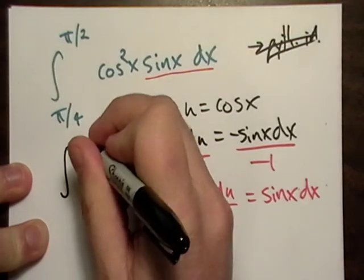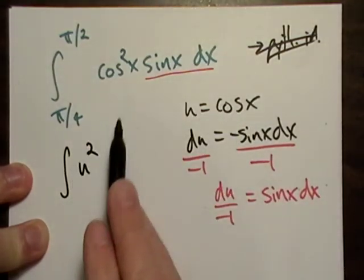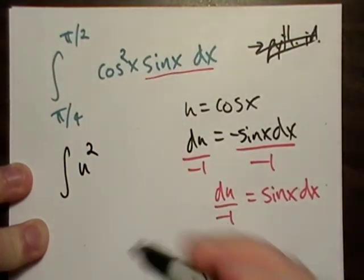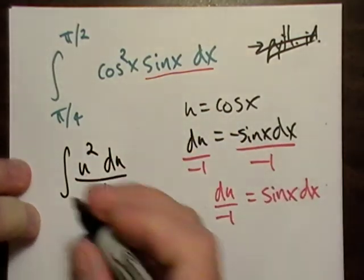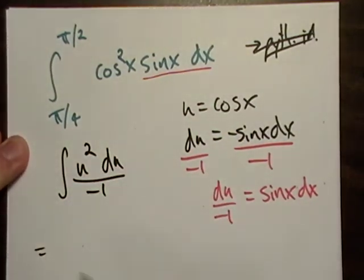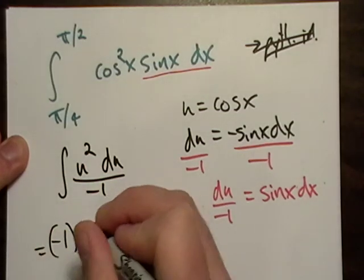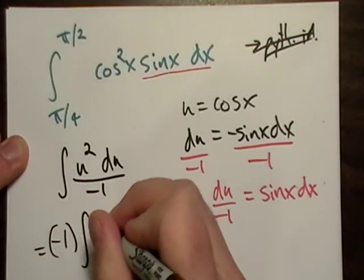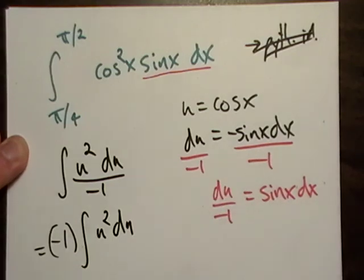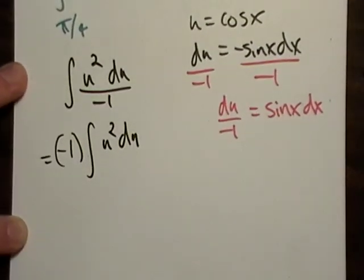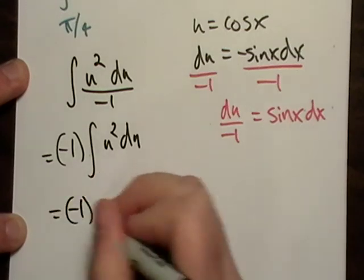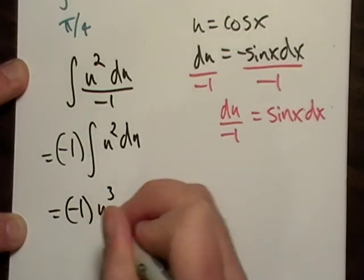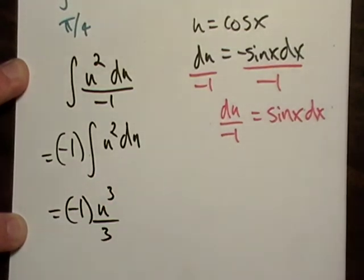All right, so I'll go back here. Let me go ahead and put in my U for cosine, and then sine X DX, so that was DU over negative one. I'm just going to write the negative one outside since it's a constant. All right, so there we are. And this one's pretty straightforward. This is negative one, and this is U to the third over three.